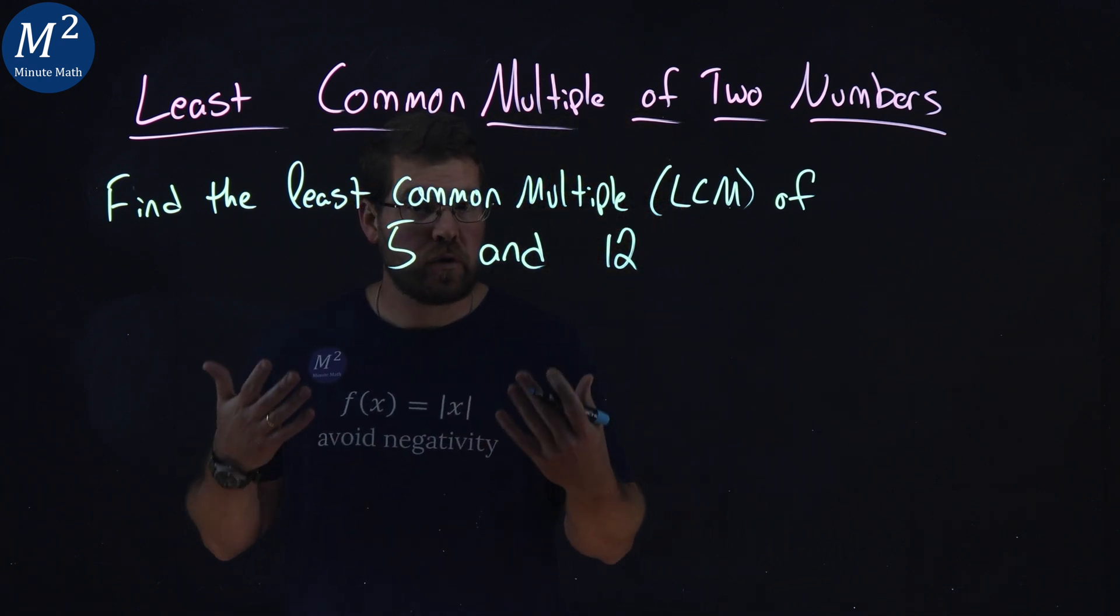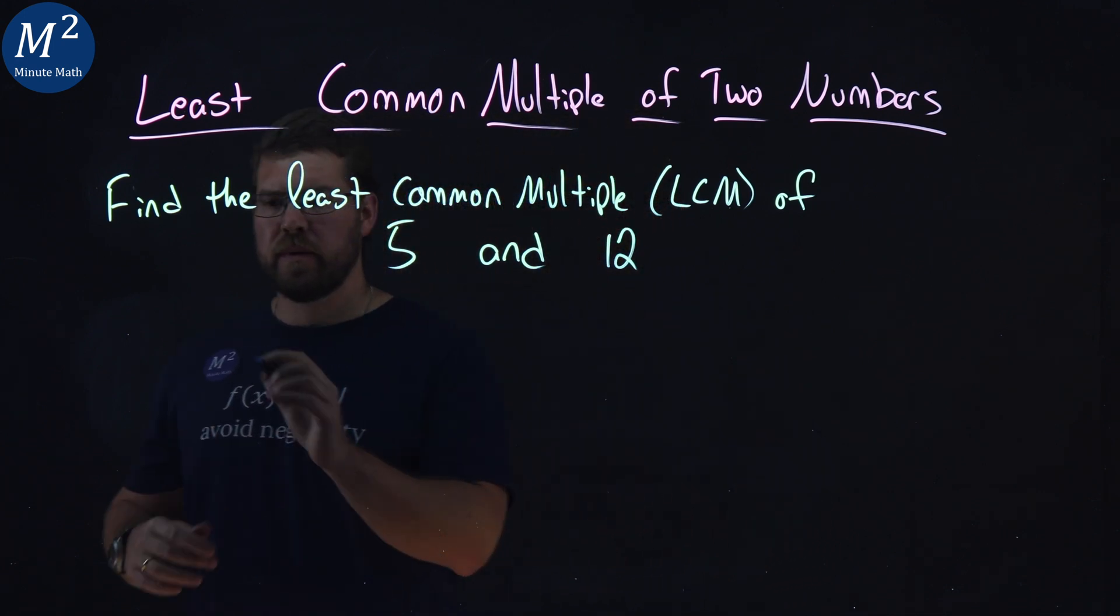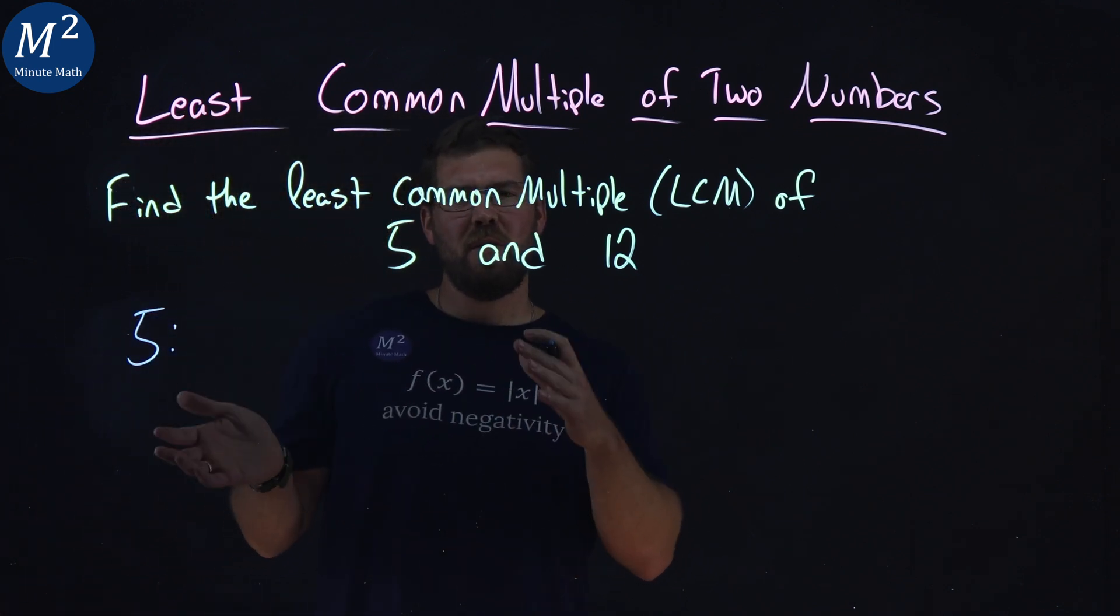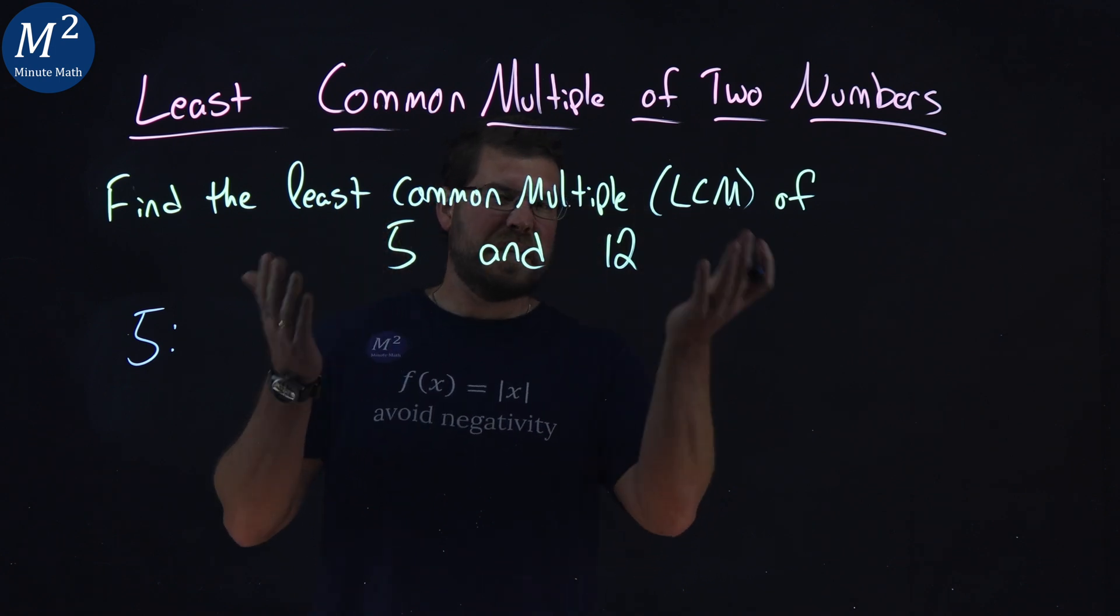We first want to write the multiples of each number. And these actually will go on forever, so we have to artificially stop ourselves to see where we might think we can find the least common multiple.